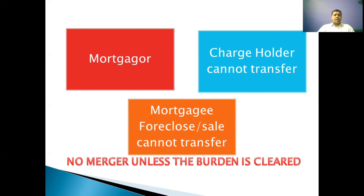This is what we come across in day-to-day life property transactions. Suppose a property is being sold and the property is encumbered — that is, the property is mortgaged. No person will come to buy the property if the property is mortgaged. This is what Section 101 speaks about. If you have any query regarding this section, you can text me in the comment box so that I can reply as early as possible. Thank you.